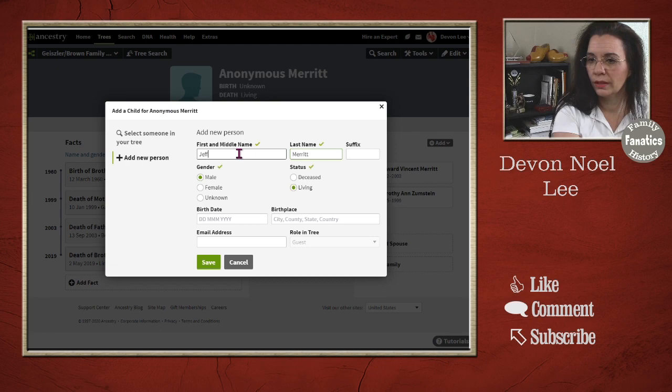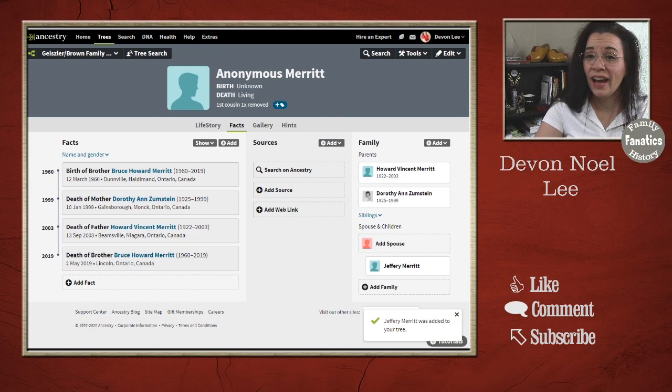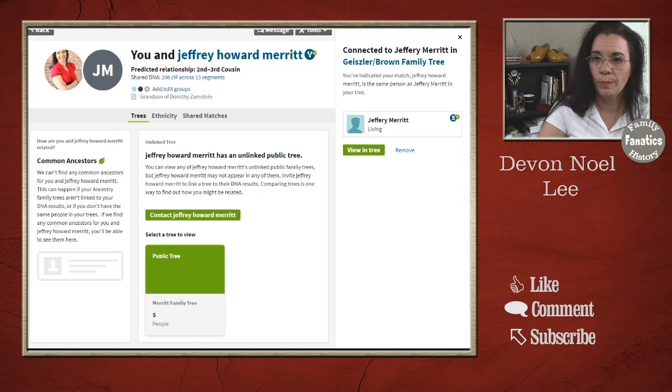So I'm going to add Jeffrey. And now I can go back over here, click on this icon, type Jeffrey. And I can connect to Jeffrey. And when I go back to my DNA match list, Jeffrey is connected, and there it goes through. Pretty slick.